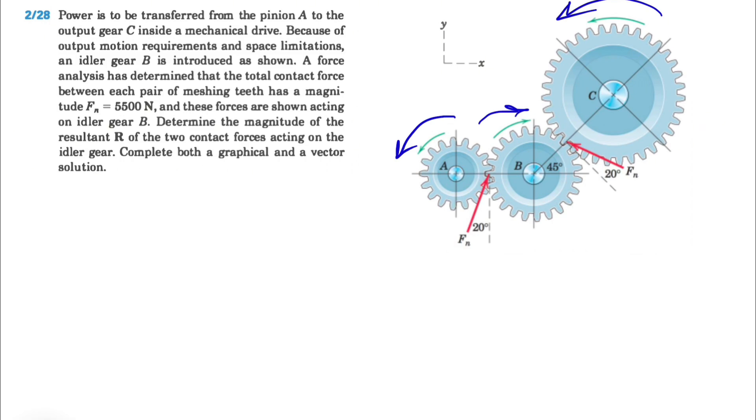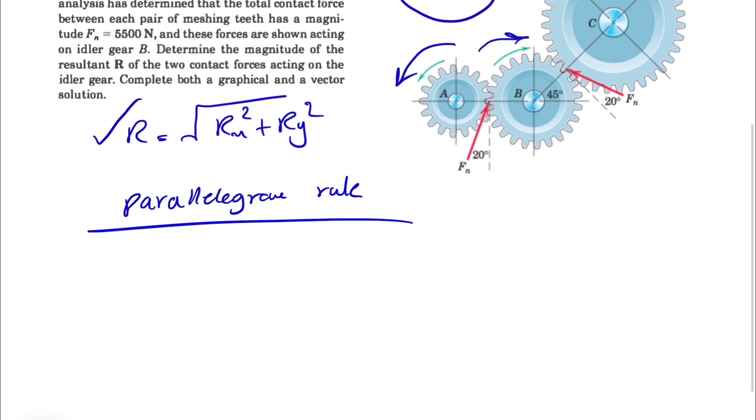We can do multiple things. First of all we have x and y axis in here, we can go with x and y components of each of these Fn's and at the end we'll find the resultant. The other way is to use the parallelogram rule, which is probably the fastest way to solve this question.